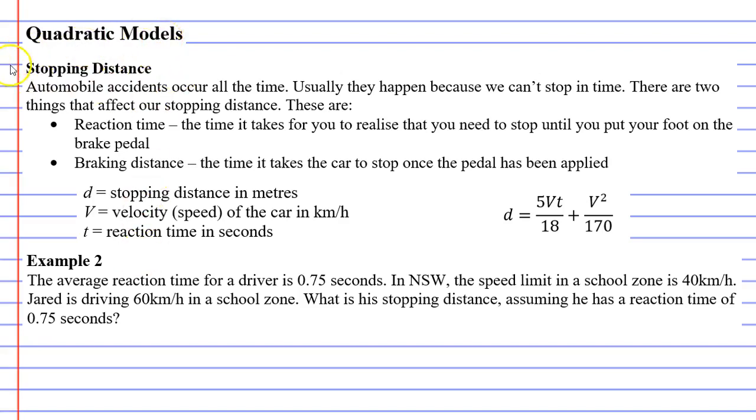To help you remember what stopping distance is all about, we'll have a look at our formula, and there's two variables that you need to worry about. V, which is the velocity or speed of the car, and T,